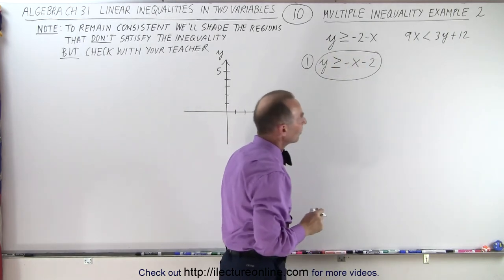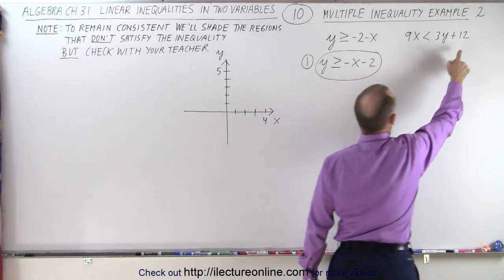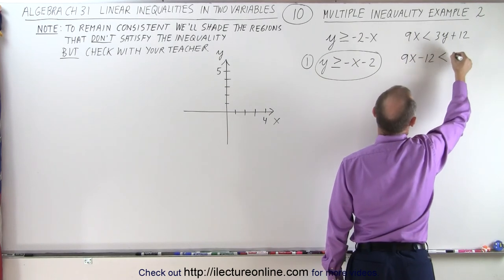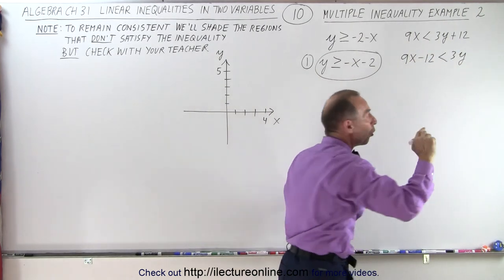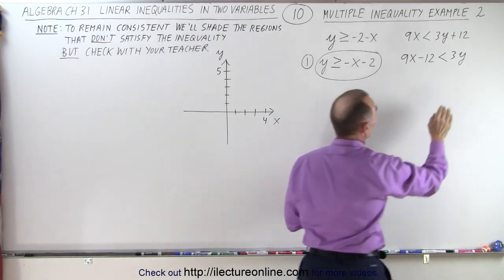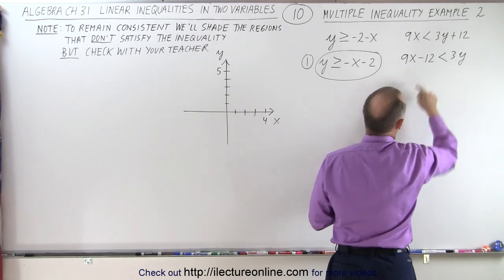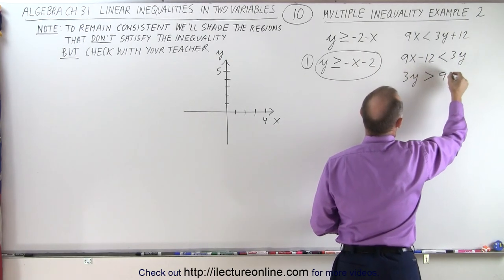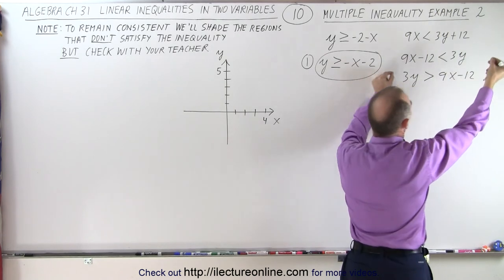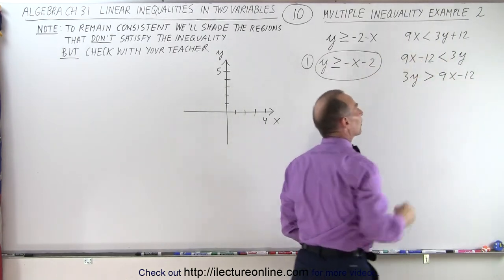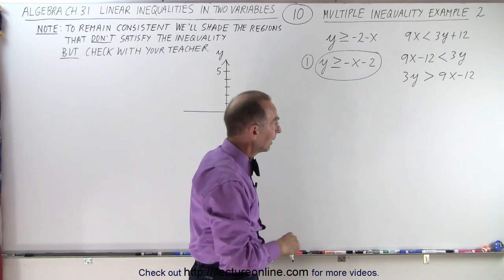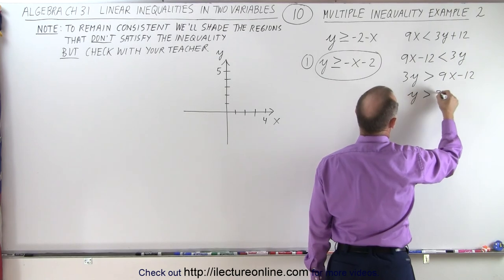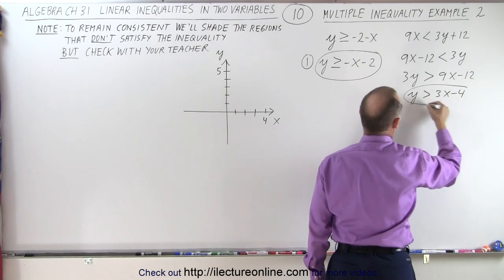The second one, let's see here, actually the way to do that is to move the 12 to the other side so we end up with 9x - 12 is less than 3y. Now we simply have to switch the whole thing around. In other words, we can say 3y is greater than these two together, so we can write this as 3y is greater than 9x - 12. We simply took the whole thing and turned it around, including the direction of the inequality symbol. Now we can divide both sides by 3, so we end up with y is greater than 3x - 4 as the second inequality.